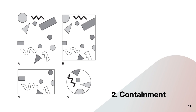Another force of unity through the gestalt principle — another evaluation that we do — is called containment. We will notice containment. A container of any kind helps to unify subjects or a composition. This is why we put our socks in a drawer — to contain them, to unify them so that we know where they are.